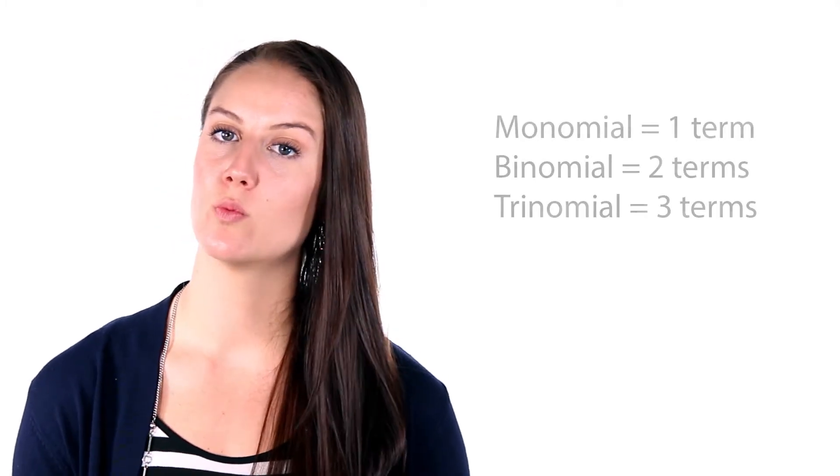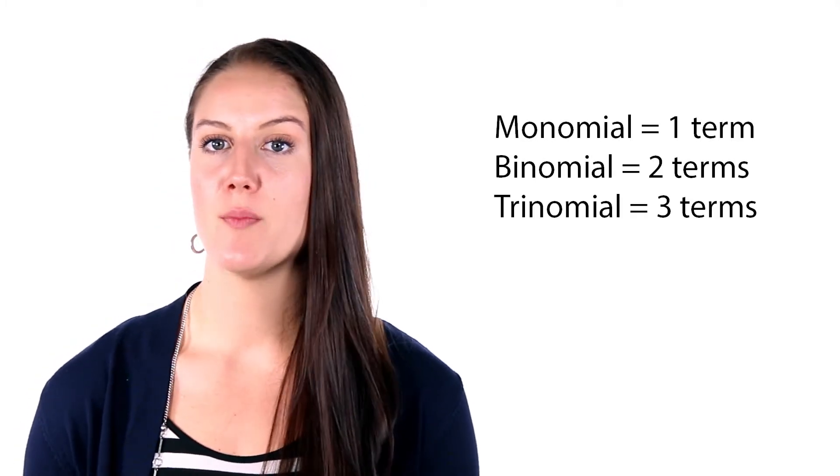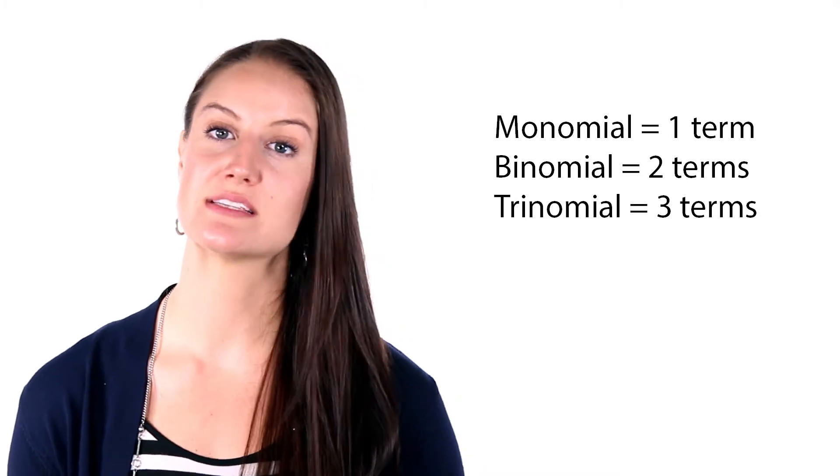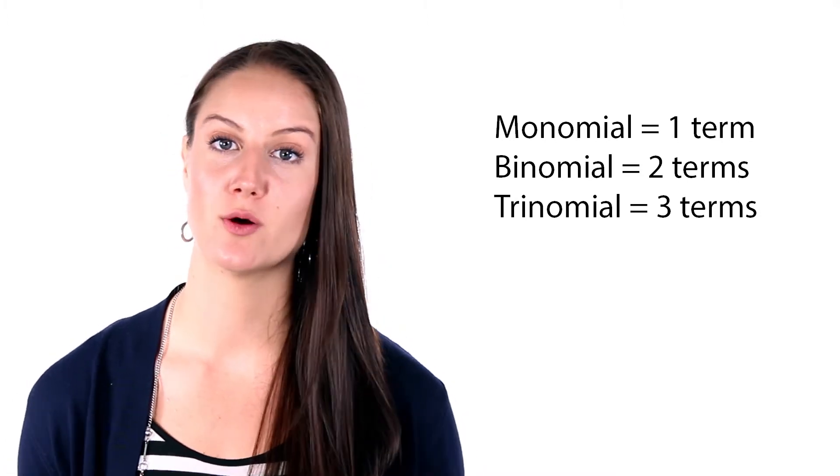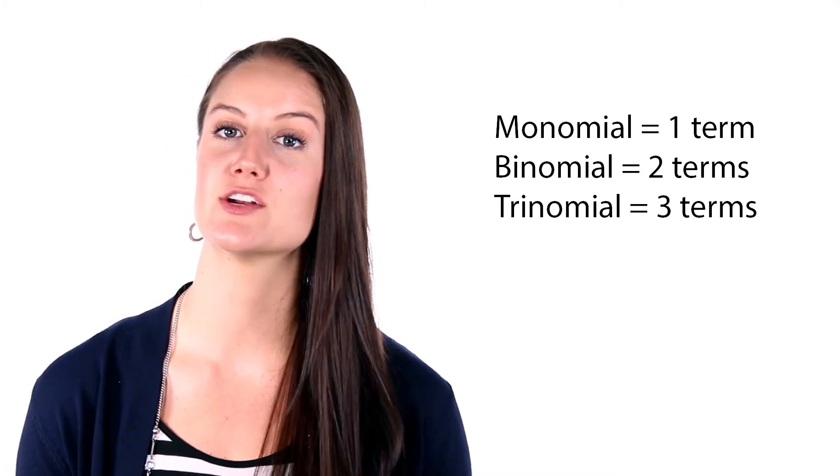Polynomials with one, two, or three terms all have special names. The name for a polynomial with one term is a monomial. A polynomial with two terms is a binomial, and a polynomial with three terms, as you might guess, is a trinomial.